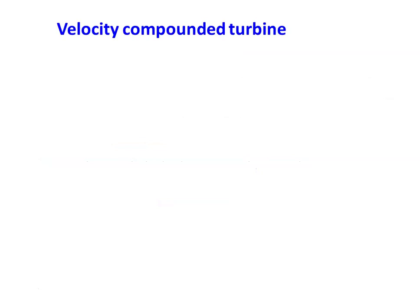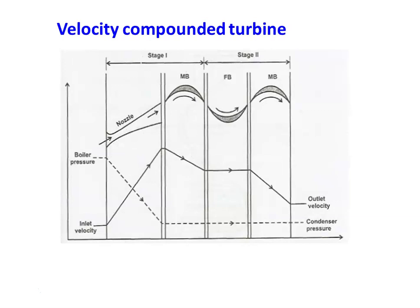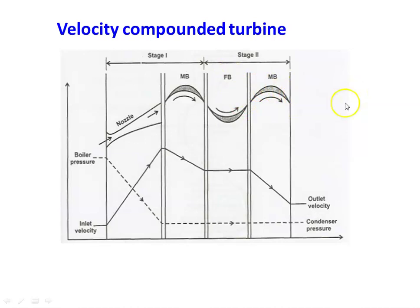First we take the velocity compounded steam turbine, where velocity is used in multiple stages. Looking at the diagram, we have a nozzle at the entrance of the turbine, next a moving blade, then a fixed blade and moving blade. This is a two-stage velocity compounded steam turbine. The first stage consists of a nozzle and a moving blade; the second stage consists of a fixed blade and a moving blade. In the velocity compounded steam turbine, we have only one set of nozzles at the entrance.